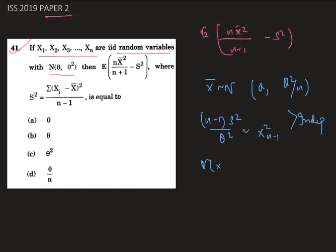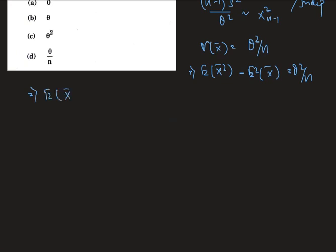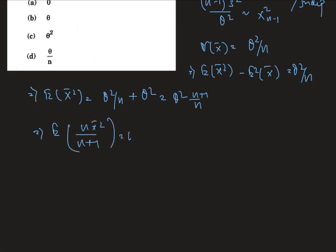The variance of x̄ can be written as θ²/n, which also equals E[x̄²] minus (E[x̄])² = θ²/n. Therefore, E[x̄²] = θ²/n + θ² = θ²(n+1)/n. So the expected value of n*x̄² divided by (n+1) equals θ².